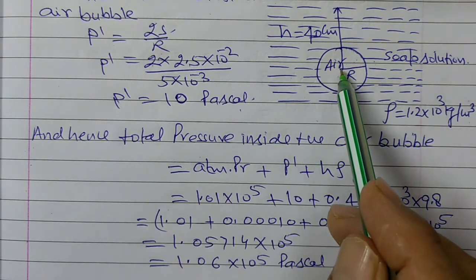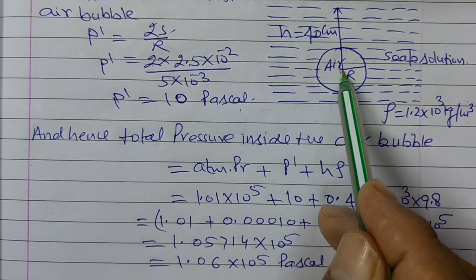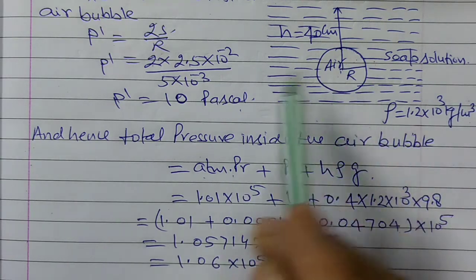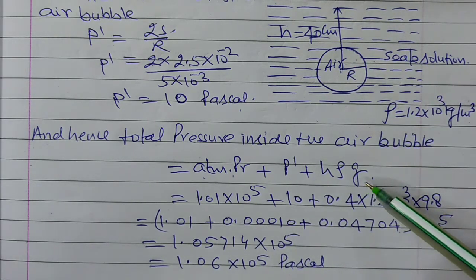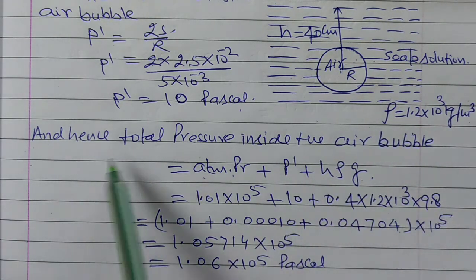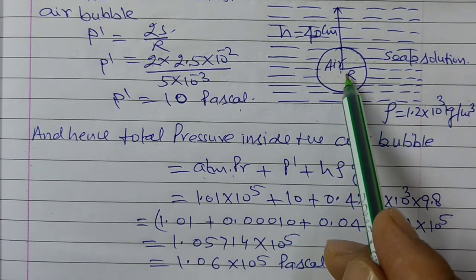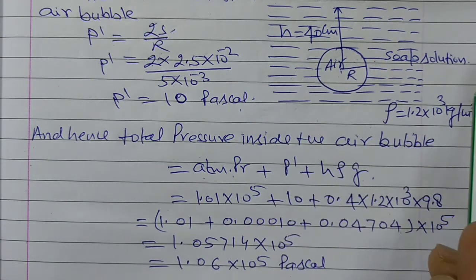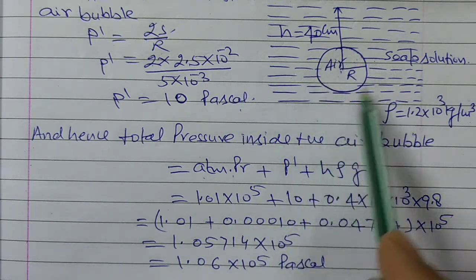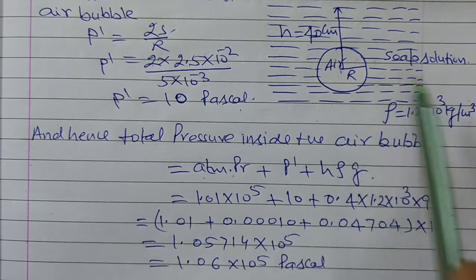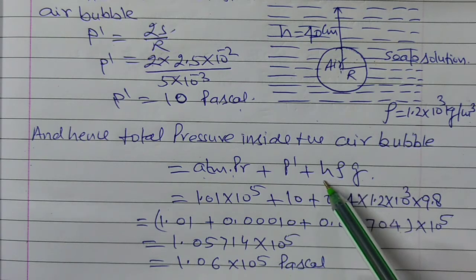Now we need the total pressure at this point. At this point there are 3 pressures: Number 1 — atmospheric pressure; Number 2 — this excess pressure; Number 3 — the pressure due to the liquid column, h·ρ·g. Hence the total pressure inside this air bubble is the sum of these three. Number 1: atmospheric pressure (when nothing else acts, this point has atmospheric pressure). Number 2: the excess pressure inside the air bubble. Number 3: the pressure due to the liquid column, h·ρ·g.